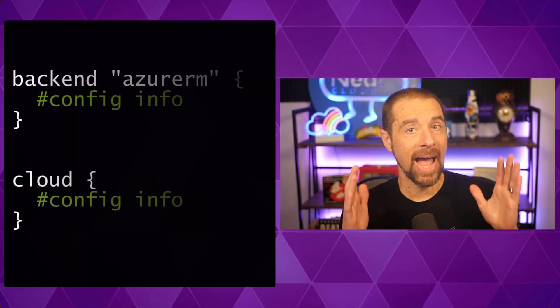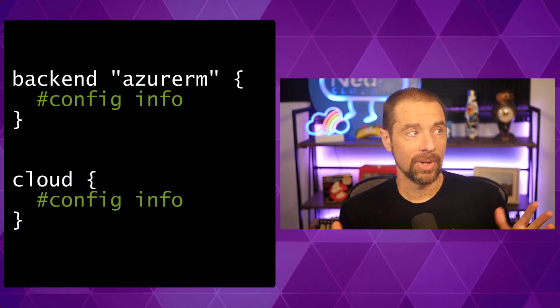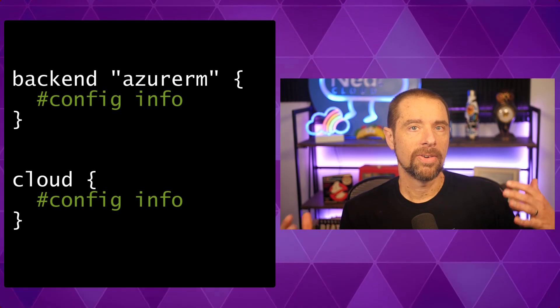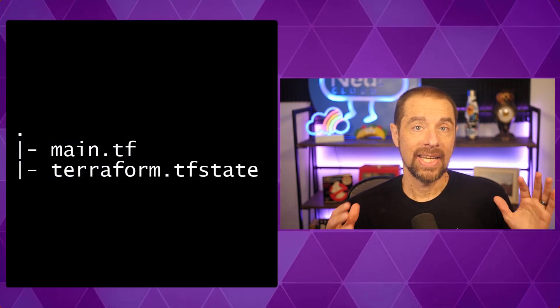So before we do the migration, let's go over some state data basics. What is state data? State data is simply the mapping of what's in your Terraform configuration to a given target environment, and there is one set of state data per workspace. How do you configure where that state data is stored? You use either a backend block or a cloud block in your configuration. If you're using Terraform Cloud, you use the cloud block; if you're using any other backend — S3, AzureRM, the local backend — you use a backend block. If you don't have anything defined, Terraform assumes the local backend, using the working directory where your Terraform configuration is.